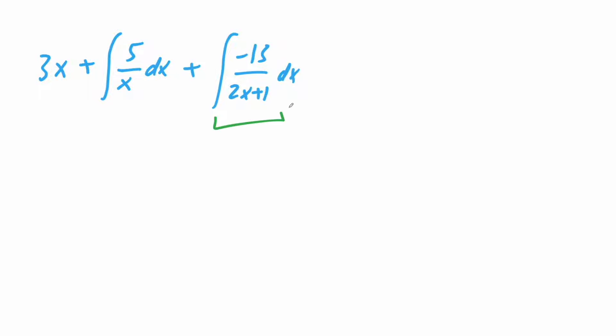This piece we can use u substitution. So we can say that u is equal to 2x plus 1. Then du is equal to 2 dx. From there we could say that du divided by 2 is equal to dx.